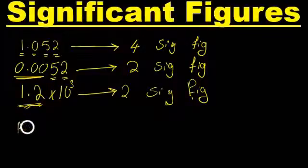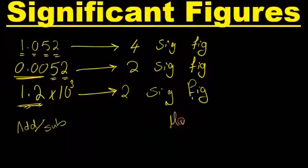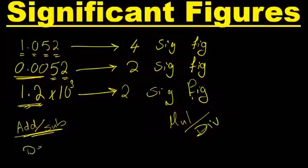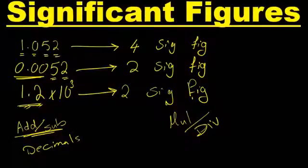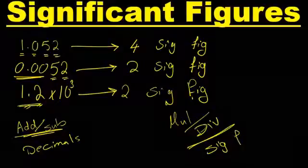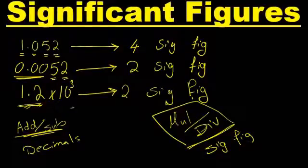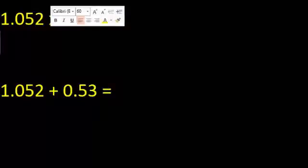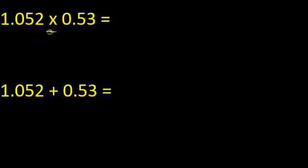For addition and subtraction, there is one rule; for multiplication and division, there is another rule. For addition and subtraction, we look at the least number of decimals, and the answer will follow the least number of decimals. However, in multiplication and division, we follow the least number of significant figures. Let's do some examples on this. The first one is multiplication.